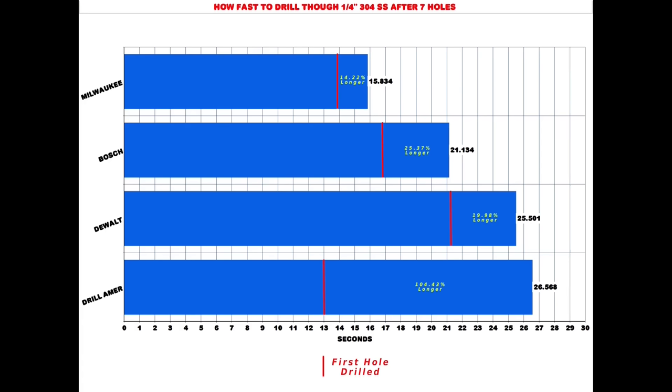Let's take a look at the results. And as you can see, a very big shocker, the Drill America that was in first place ended up in fourth place. When the Drill America bit was new, it was able to outperform the other three. And you can see now it takes 26.568 seconds to drill through that quarter inch 304 stainless angle. That's over 104% longer. The next slowest bit in line was the DeWalt, 25.501 seconds, just over one second less than the Drill America, and that's only 19.98% longer than when the bit was brand new. Next in line is the Bosch coming in at 21.134 seconds. That's 25.37% longer than when the bit was brand new. And coming in in first place is the Milwaukee at 15.834 seconds. That's only 14.22% longer.